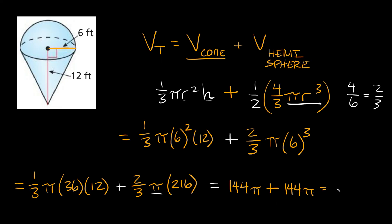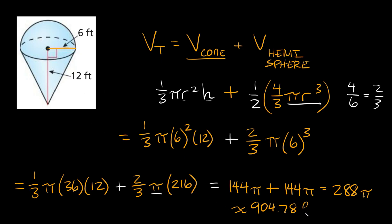So we get 144π plus 144π, which equals 288π. Plugging that into a calculator gives approximately 904.78, and since we're talking about volume in feet, the units are feet cubed.